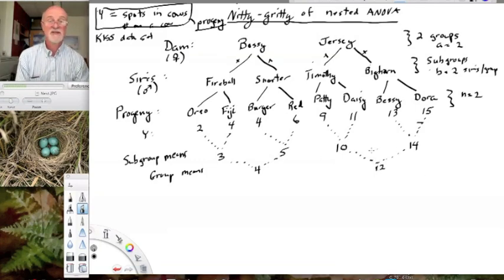For Fireball, we see that the mean is 3. For Snorter, the mean of Snorter's progeny is 5. For Timothy, the mean of Timothy's progeny is 10, and the mean of Bighorn's progeny is 14. Likewise, we have group means that we can calculate. Group means very nicely come out to beautiful numbers: 4 for Bossy and 12 for Jersey. Our question is, is there a difference between Bossy and Jersey in the number of spots?